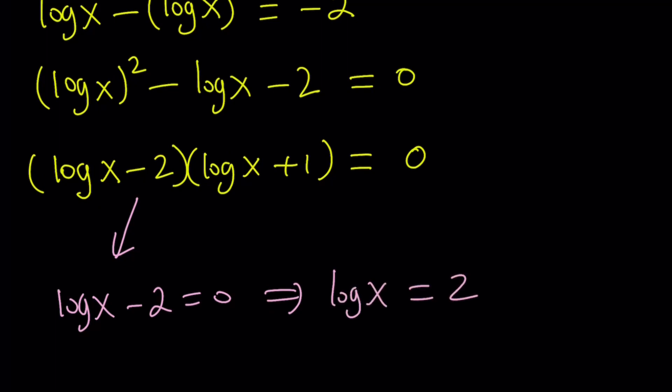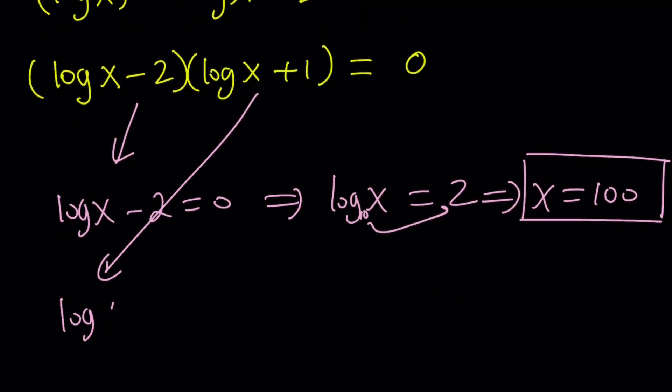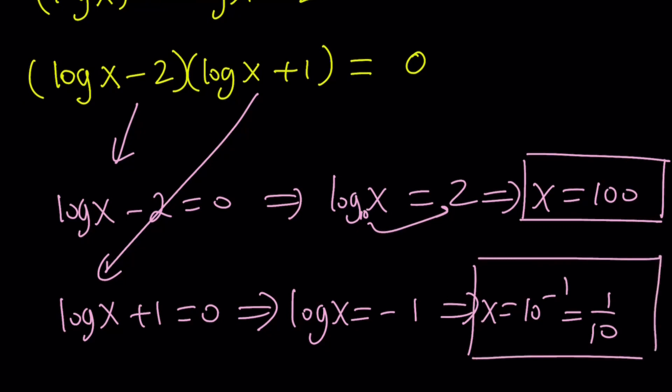And this means, because the base is 10, this means x is equal to 10 to the second power, or x equals 100. Notice that we are going to have two solutions. And the second piece gives you log x plus 1 equals 0. That implies log x equals negative 1, and this implies x equals 10 to the power of negative 1. And from here we can write the x as 1 over 10. So we got two solutions, 100 and 1 over 10. Those are going to be the two solutions, and notice that 1 tenth is very small compared to 100.